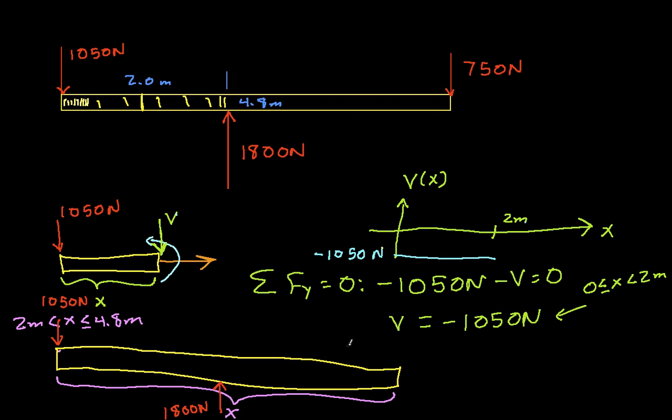So again, I do the sum of the forces in the y direction equals 0. And I have minus 1050 newtons plus 1800 newtons minus v. This is equal to 0. And when I solve this for v, I get v is 750 newtons.